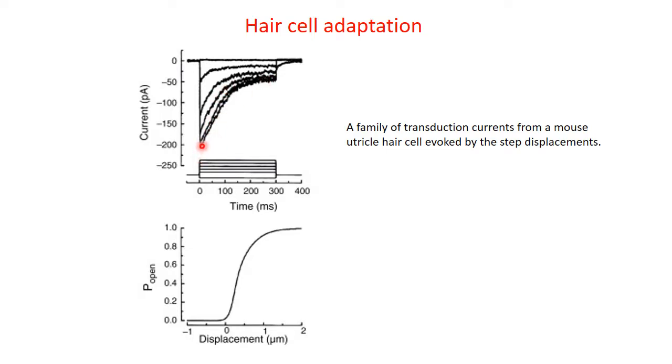In the beginning, for example, there's a 200 picoamp current, and then at the end of 300 milliseconds, for this kind of displacement, the current magnitude was much smaller. Basically, hair cells are able to adapt to this mechanical stimulation, and that's very important to expand the dynamic range of the cells and also to allow very fast responses.